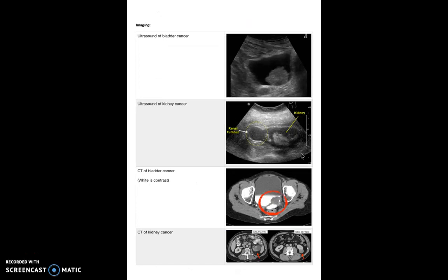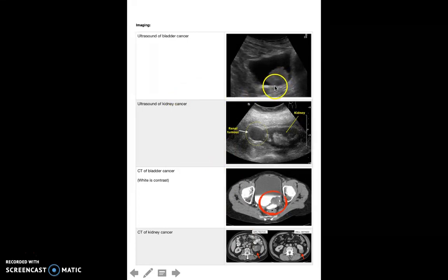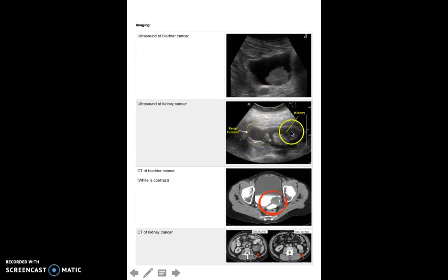Here are a few ultrasound images of bladder and kidney cancer. You've got ultrasound here and CT scans at the bottom. It's really important to know the normal anatomy on ultrasound and CT, because then you can distinguish that, for example, this is abnormal, this is bladder cancer here. You can distinguish that this is a renal tumor in comparison to a normal kidney.